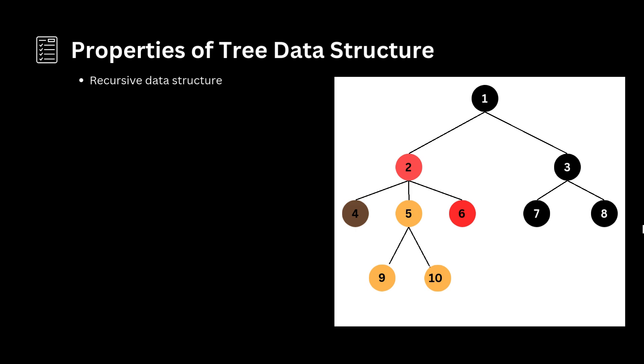The left subtree can be further divided into smaller subtrees, each shown in different colors. Recursion involves breaking down a problem into smaller self-similar problems, and this recursive property of the tree data structure is utilized in various applications.